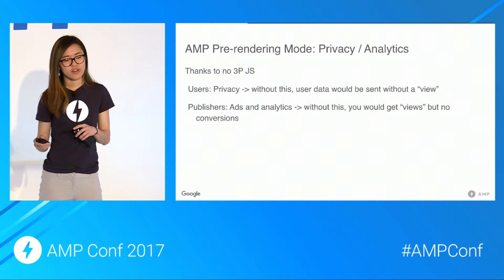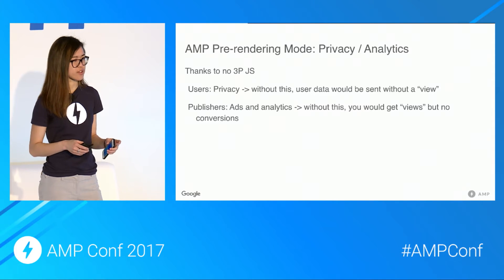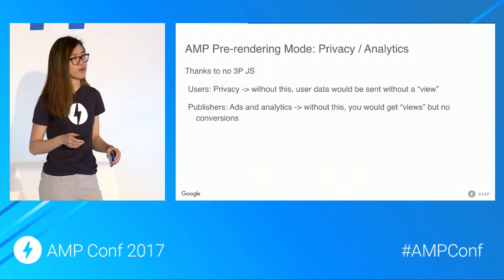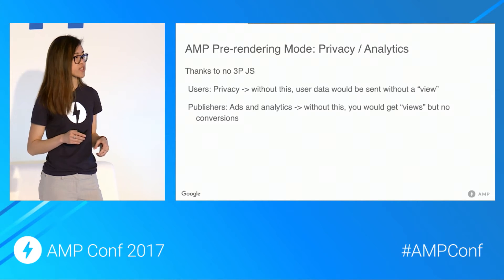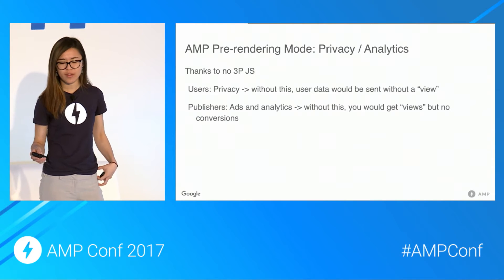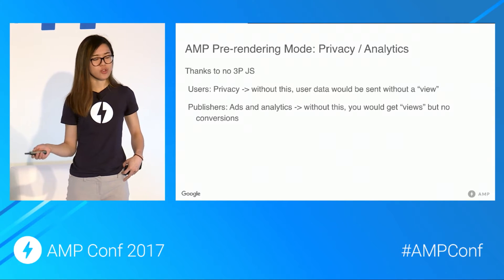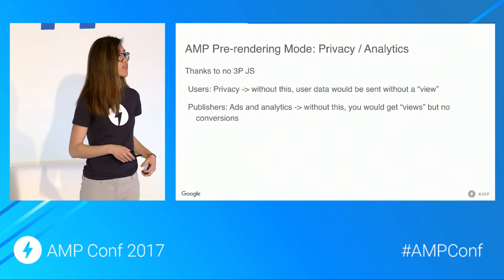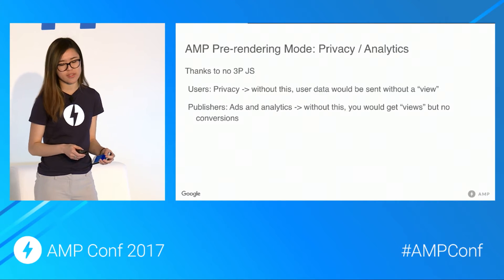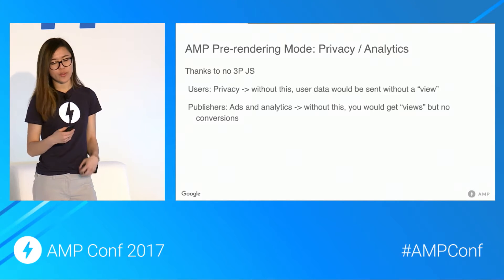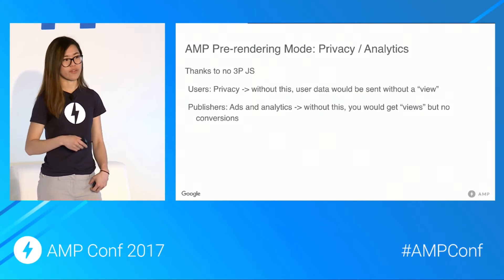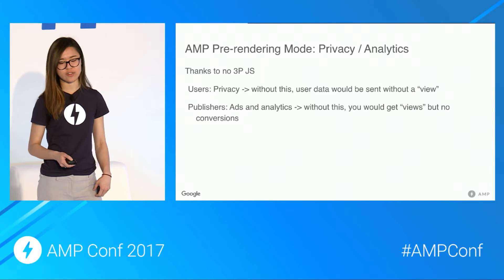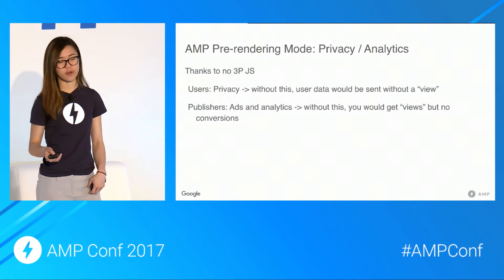The other pillar of AMP pre-rendering mode is that it handles privacy and analytics in a smart way, so you don't have to deal with it. It preserves user privacy and analytics variants, since no third-party JavaScript can be executed at this time. On the user side, you don't want to send their data to the publisher without them having actually viewed the document. And on the publisher side, they don't want to know that you pre-rendered a view without the user having looked at it, because that impacts their conversions. AMP pre-rendering mode handles all of this for you.